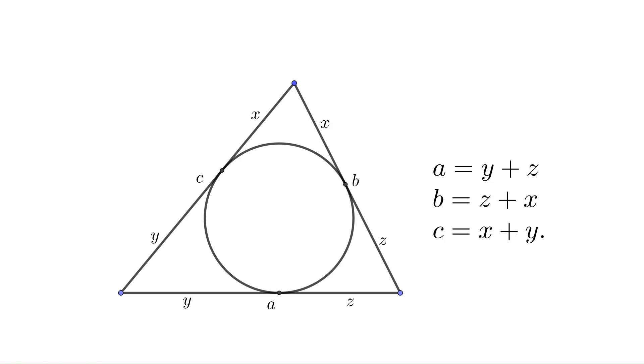Conversely, for any positive real numbers x, y, and z, if we define a, b, and c this way, then a, b, and c can always be the side lengths of a triangle. You can easily check, for example,